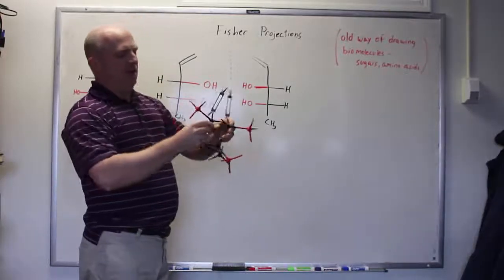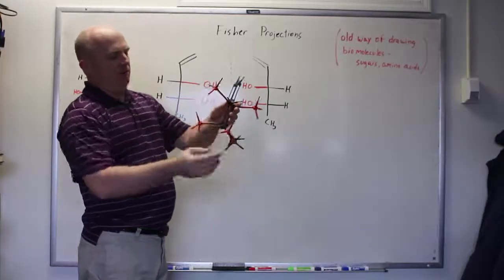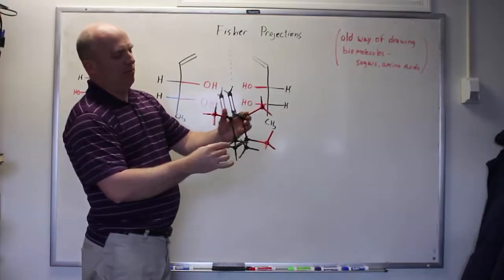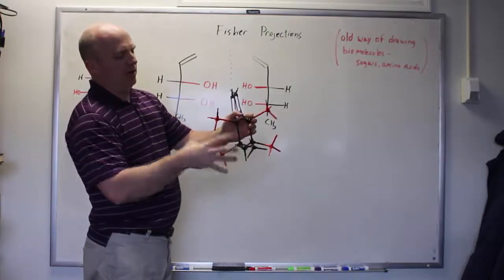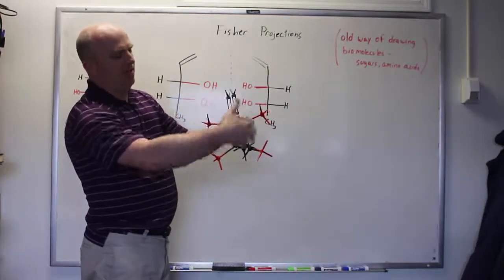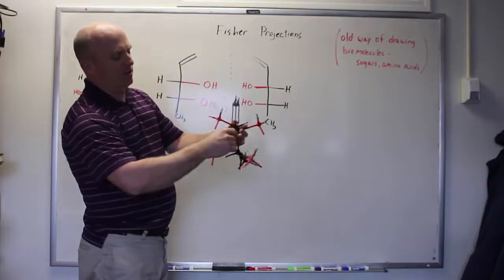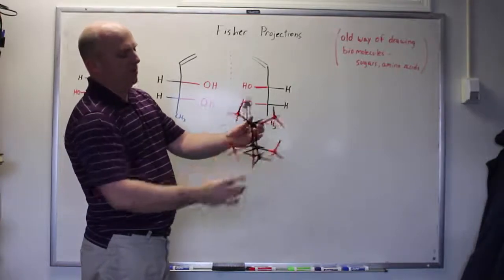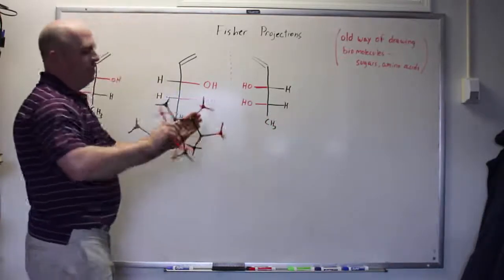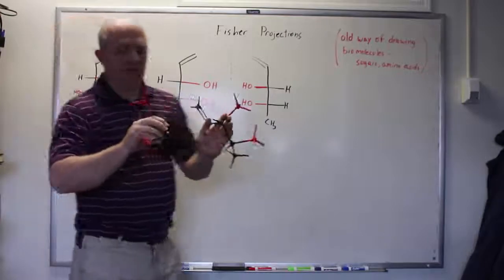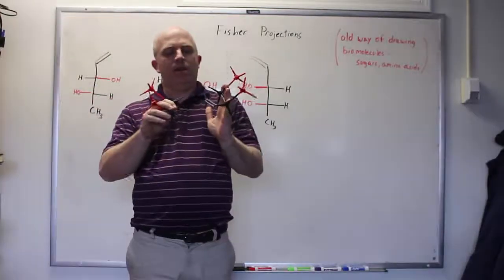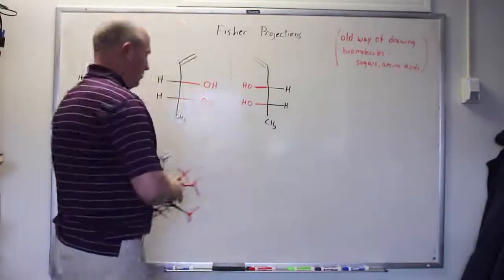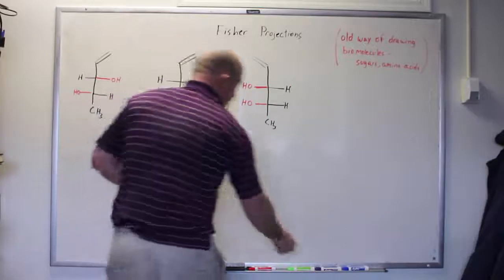Those two are clearly mirror images of each other, and it shouldn't be possible for me to superimpose these molecules on each other. Specifically, if I align the double bonds and the methyl groups, what you see is that one molecule has the OHs on one side and the other molecule has the OHs on the other side. You cannot superimpose them. So if they are mirror images of each other and they're not superimposable, then we know of course that these are enantiomers.